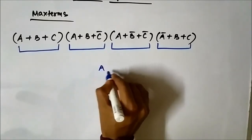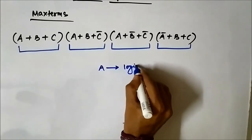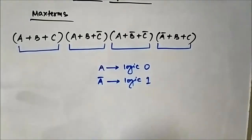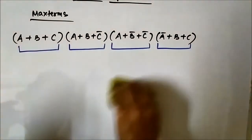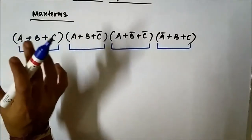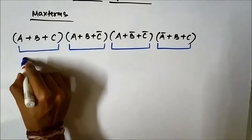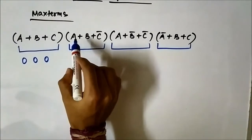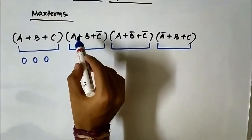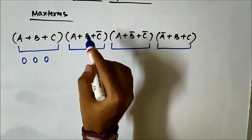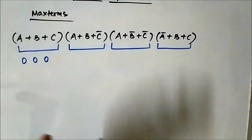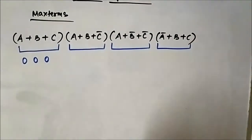By the definition of a max term, every uncomplemented variable represents logic 0 and every complemented variable represents logic 1. So here, a plus b plus c — all the boolean variables are uncomplemented, so it actually represents 0, 0, 0. Here, a plus b plus c-bar — the 'plus' means OR operation, it is actually a OR b OR c-bar.